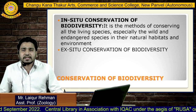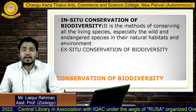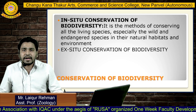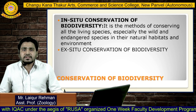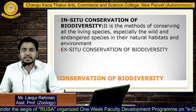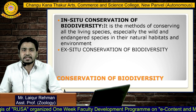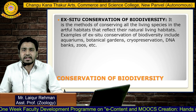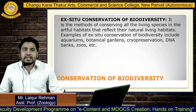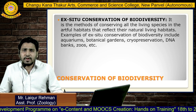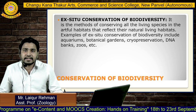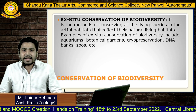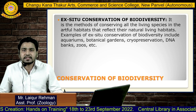In the last topic, conservation of biodiversity, which is very important, we are going to see in-situ conservation and ex-situ conservation. In-situ conservation is the method of conserving all living species, especially wild and endangered species, in their natural habitats and environment. Ex-situ conservation is the method of conserving all living species in artificial habitats that reflect their natural living habitats. Examples of ex-situ conservation include aquariums, botanical gardens, cryopreservation, DNA banks, zoos, etc.